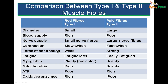Comparing red type 1 fibers to pale type 2 fibers: in diameter, type 1 are small and type 2 are large. Blood supply is rich in type 1 and poor in type 2. Nerve supply: type 1 has smaller nerve fibers; type 2 has larger nerve fibers. Type 1 are slow twitch; type 2 are fast twitch. Force of contraction is weak in type 1 and strong in type 2. Type 1 fatigue later; type 2 fatigue easier.